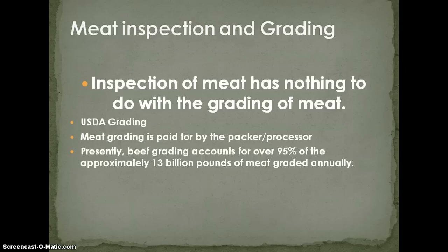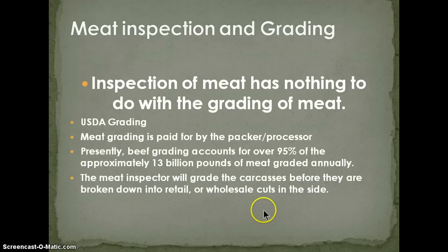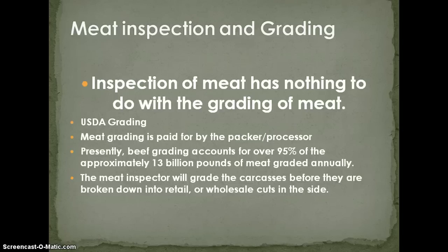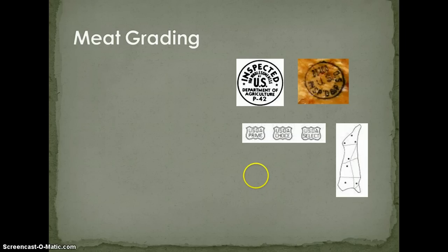The primary reason packers grade meat is because a grade makes people associate a certain quality, which commands a better price. As we learned when looking at ribeye pictures, you don't really need to know the quality grade if you understand how fat is distributed in the interior of the muscle. A meat inspector grades the carcass before it's broken down into retail or wholesale cuts. They cut between ribs 12 and 13 — the process called ribbing — then let it bloom so oxygen reaches the fat, and apply a videometer that measures the concentration of fat in the meat.